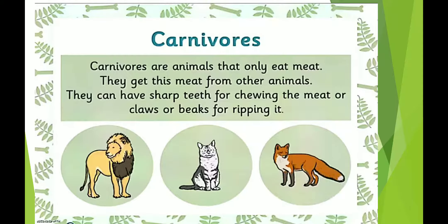Carnivorous are animals that eat only meat. They get this meat from other animals, meaning they are flesh-eating animals. They have sharp teeth for chewing meat, or claws or beaks for ripping it. Some birds also eat flesh. Carnivorous birds include eagle, vulture, and kite — they all eat flesh.